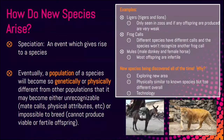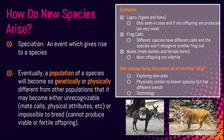How do new species arise? We know that speciation is the event that gives rise to a new species. Eventually, a population of a species will become so genetically or physically different from other populations that it may become either unrecognizable — the organism doesn't recognize the calls or physical attributes, it looks too different — or it's impossible to breed and they can't produce viable or fertile offspring.